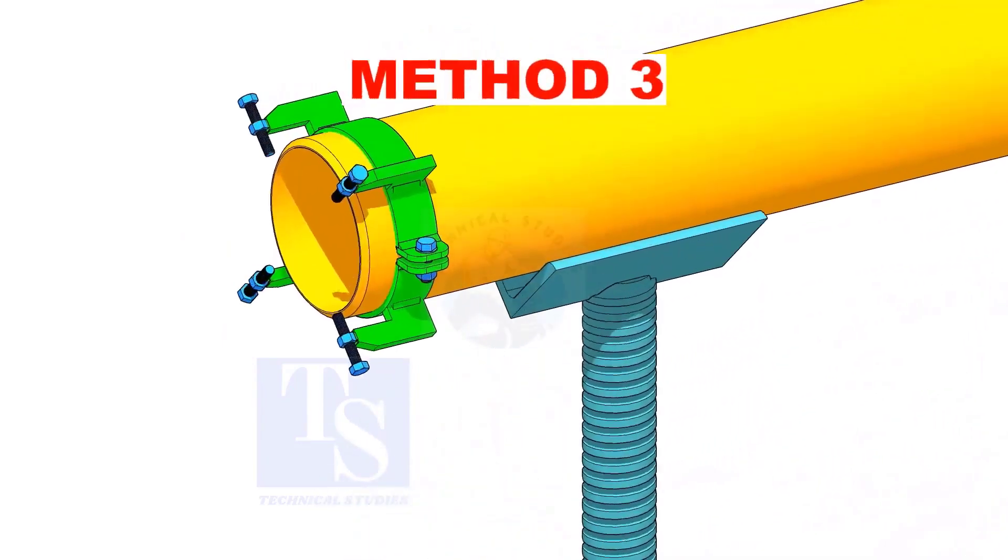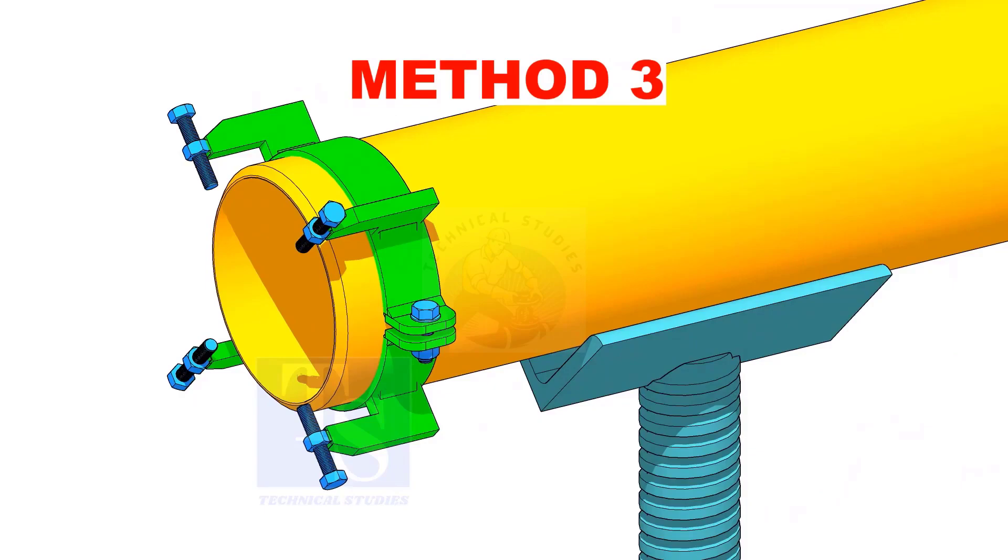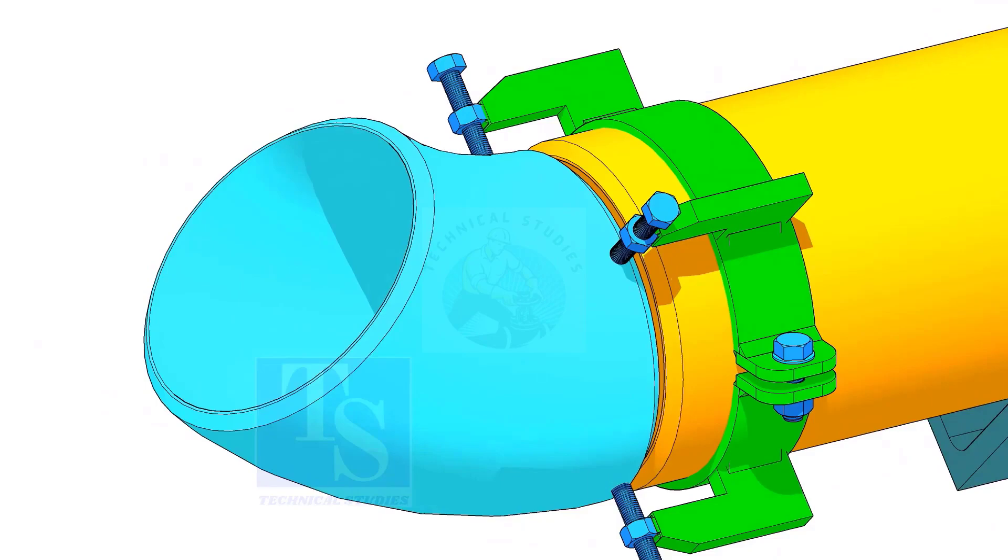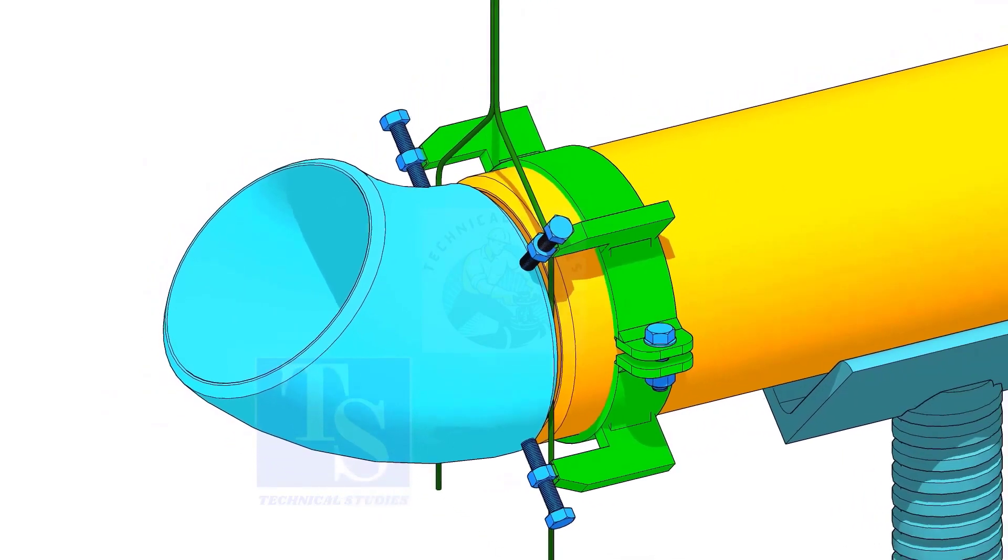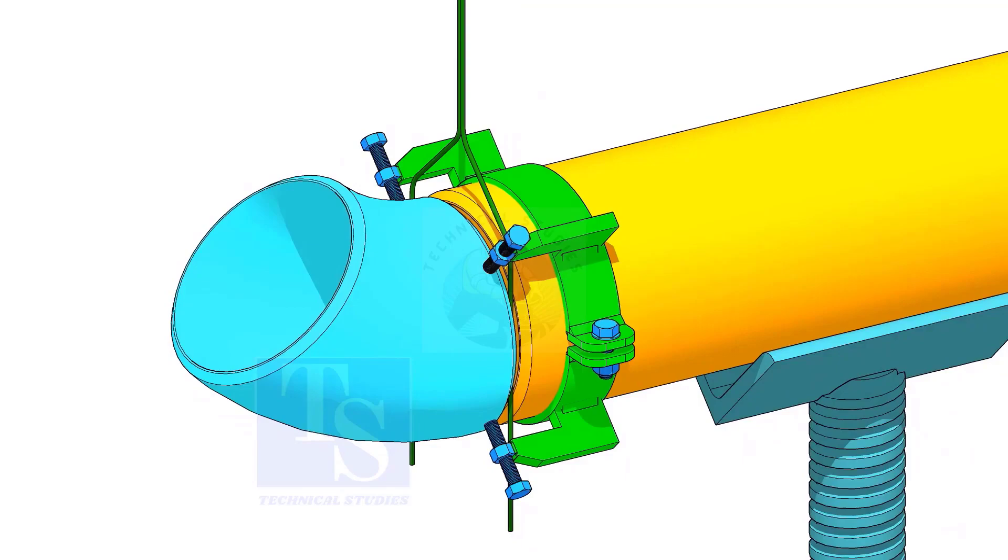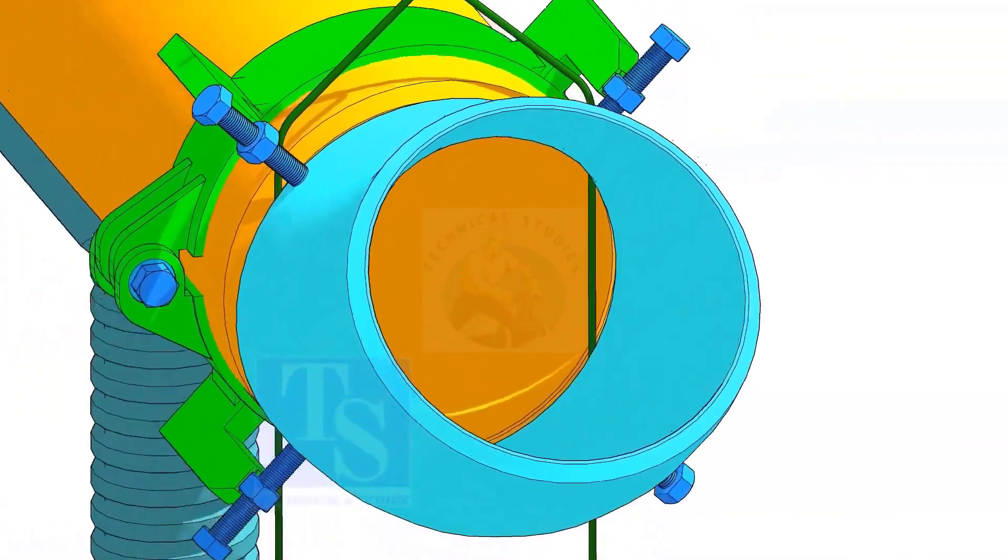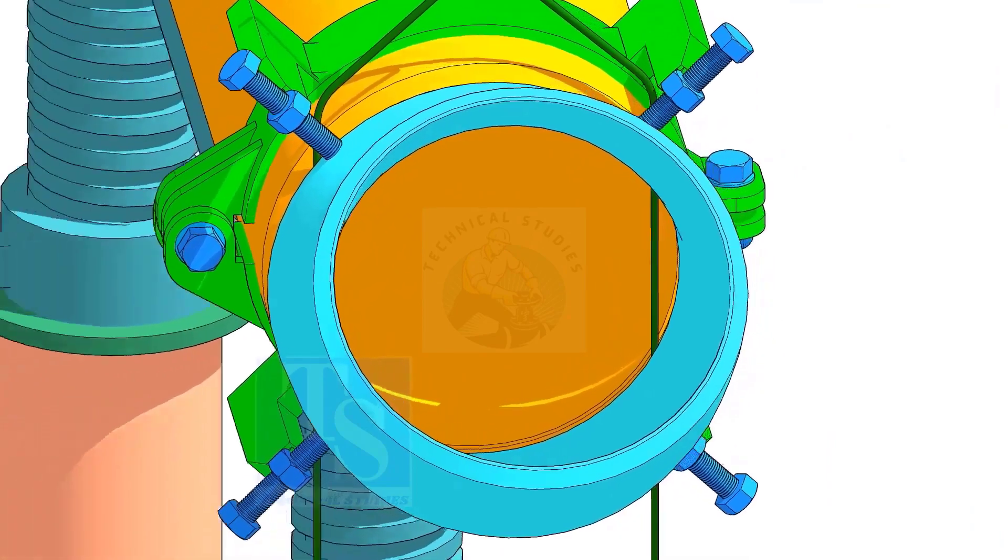Please note that this method is for trained fitters only. After correcting the overlap and the gap, tack weld on both sides of the joint.